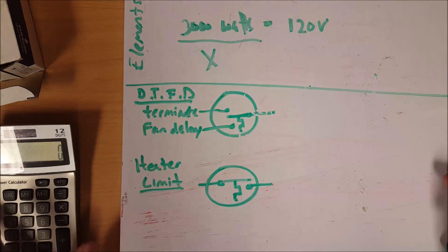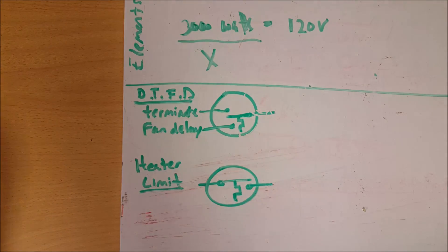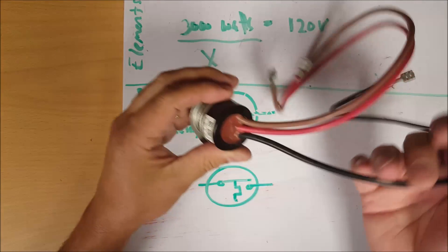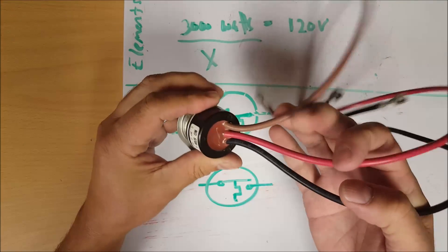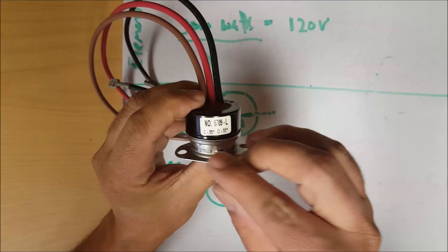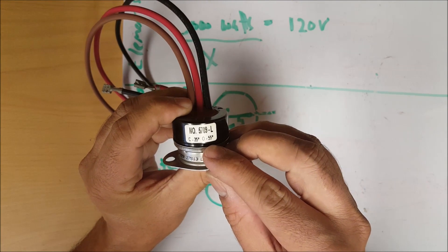Alright, next thing is going to be the defrost terminator slash fan delay switch. I have one right here. Basically it's a three wire switch with a black, red, and brown wire. If you look here on the numbers it's got C 35 degrees and O 55 degrees.